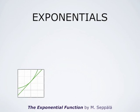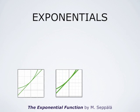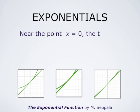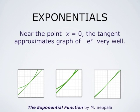This picture shows the graph of the exponential function and its tangent line at x equals 0. If we zoom in close to x equals 0, we observe that the tangent line and the graph of the exponential function become inseparable. This means that near x equals 0, the tangent approximates the graph of e to the x very well, and so when x is close to 0, e to the x is very close to 1 plus x, which is the equation of the tangent line. This is an important observation.